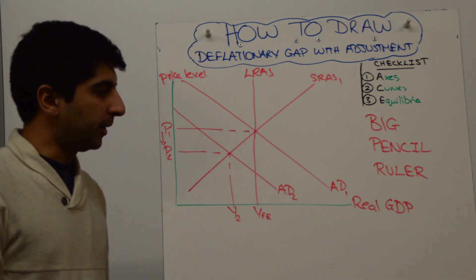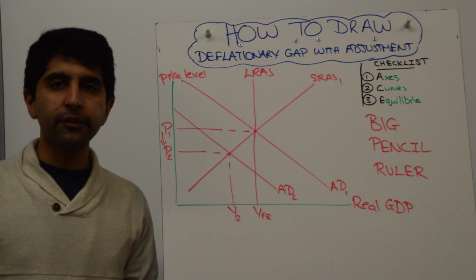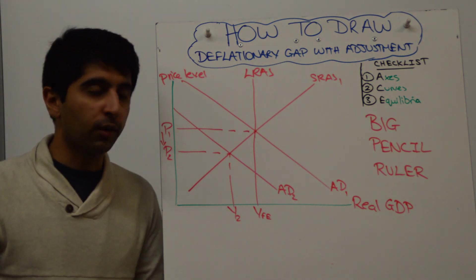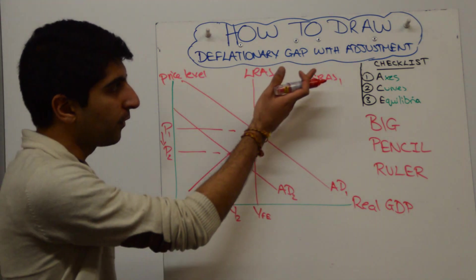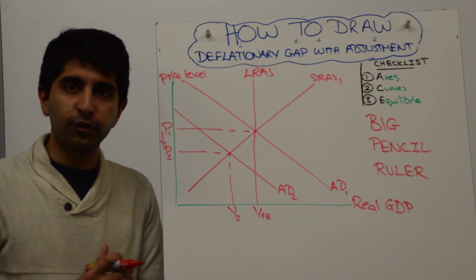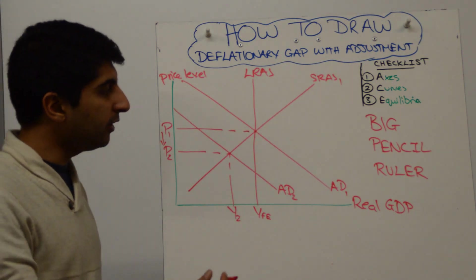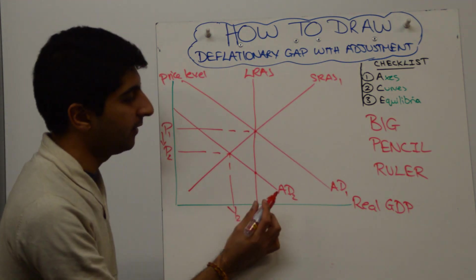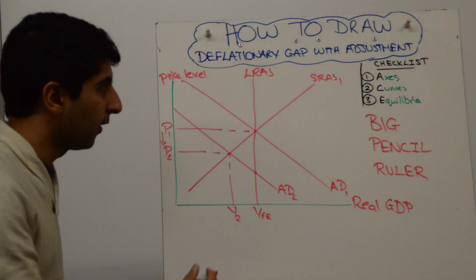Now we want to show the adjustment. So what happens in the long run of the classical model is that wages adjust, wages are flexible downwards in the long run, which means that SRAS will shift to the right as there are lower costs of production in the economy. And what you need to draw is SRAS shifting to the right, where it cuts AD back at this full employment level of output.